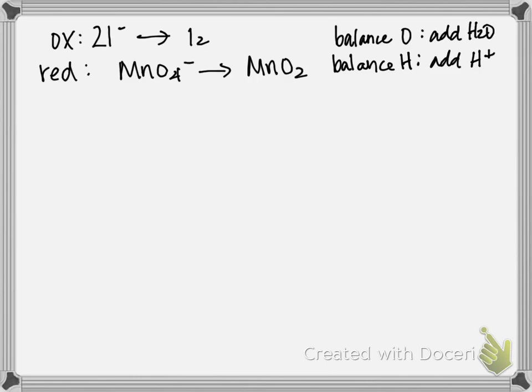So for our oxidation half reaction, we don't have to do anything. There's no oxygens, there's no hydrogens. So it's still just 2 I minus gives you I2.